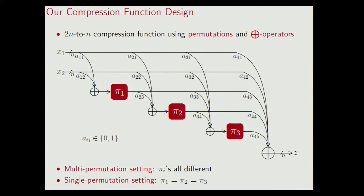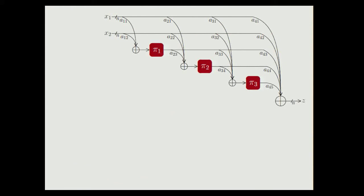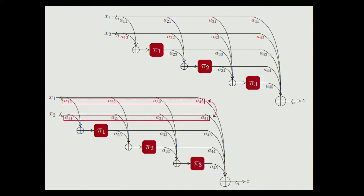The main focus in the presentation is on the multi-permutation setting, and we consider essentially all of these designs. There are 14 constants aij's, so 2 to the power of 14 functions — that's quite a lot. But it turns out that there are some similarities among those functions. Consider, for instance, a design on the one hand, and on the other hand, a design where the first two rows of the aij's are swapped. While these two designs are essentially two different compression functions, from an adversary's perspective, those are not really different, because if the adversary can find a collision for this design, it can just swap x1 and x2 to get a collision for the other design.